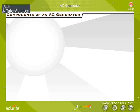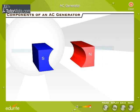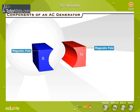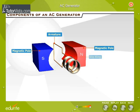Components of an AC Generator: An AC generator consists of a magnet with concave cylindrical poles, an armature, and a current-collecting arrangement. The current-collecting arrangement consists of slip rings and brushes.